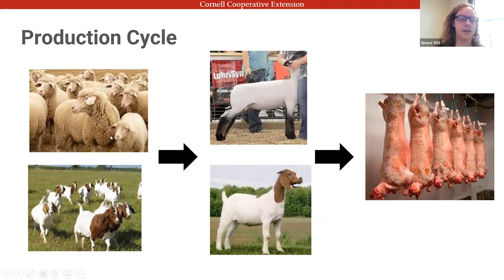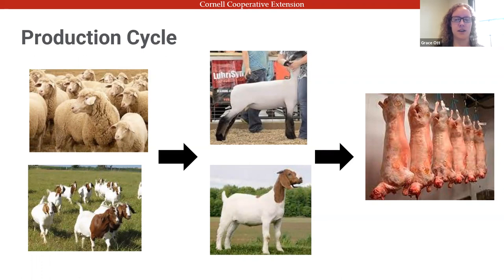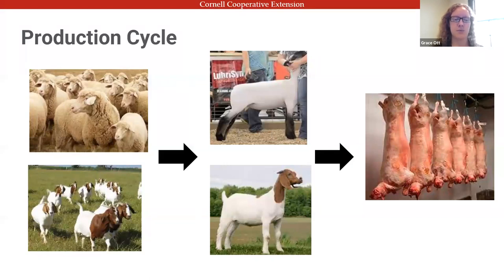On the left we have the flock of sheep or herd of goats whose purpose is to produce lambs and kids that move on through the production cycle. Ewes and does typically will have twins, which is the ideal scenario — we really want them to have twins as much as possible because that increases production value, whether you're selling those as live animals or down the line as meat.